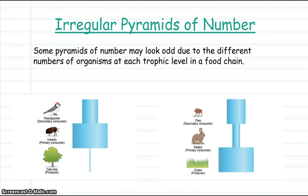For example, in this picture on the left, there is only one single oak tree. However, in the picture on the right, there will be many fleas living on a single rabbit.